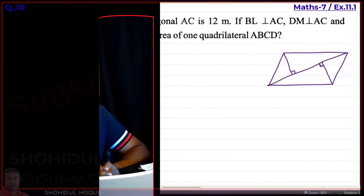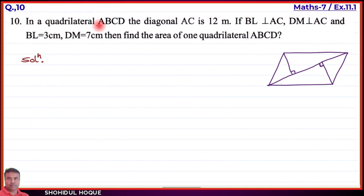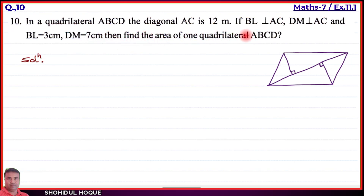Question number 10. In a quadrilateral ABCD, the diagonal AC equals 12 meters. BL is perpendicular to AC and DM is perpendicular to AC. BL equals 3 centimeters and DM equals 7 centimeters. Find the area of quadrilateral ABCD.